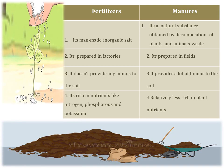Let's see the difference between fertilizers and manure. Fertilizers are man-made whereas manure is a natural substance. Fertilizers are prepared in factories; manure is prepared in fields. Fertilizers don't provide any humus to the soil whereas manure provides a lot of humus. Fertilizers are rich in nutrients such as nitrogen, phosphorus, and potassium, but manure, as compared to fertilizers, is less rich in nutrients.